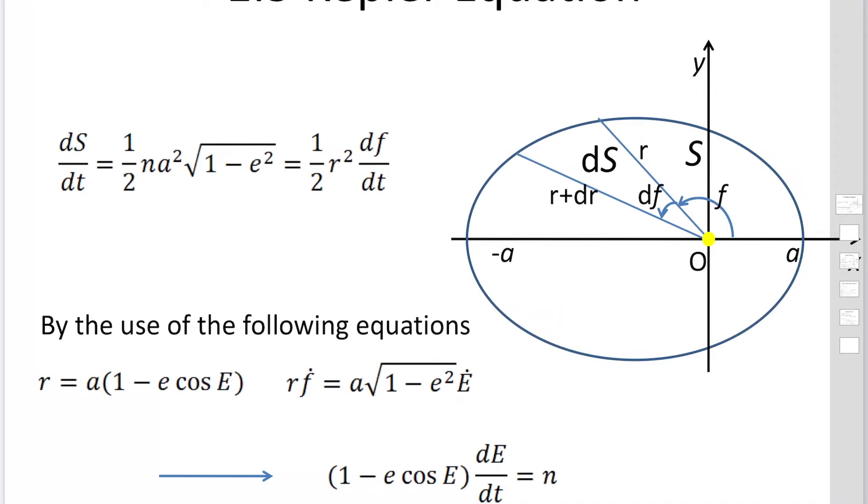In this lesson, we'd like to find out the positions of the planet on the orbit using Kepler's second law. So from Kepler's second law, we have this relation. Also, R can be expressed with this, and F dot can be expressed with this one. Using this equation, we'd like to find out the positions of the planet on the orbit by solving this equation.